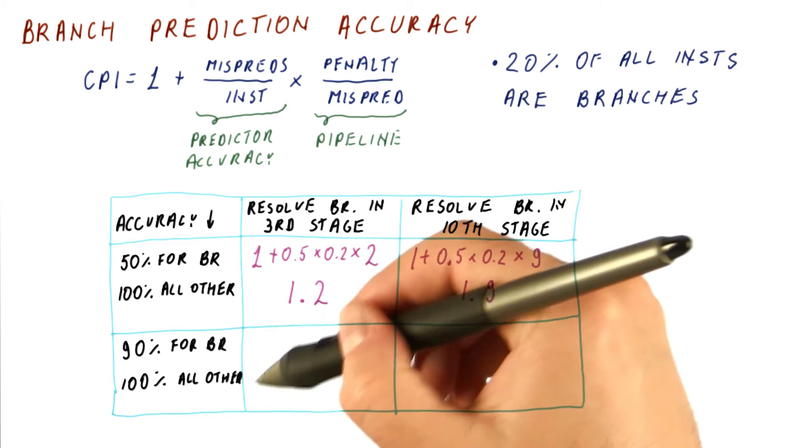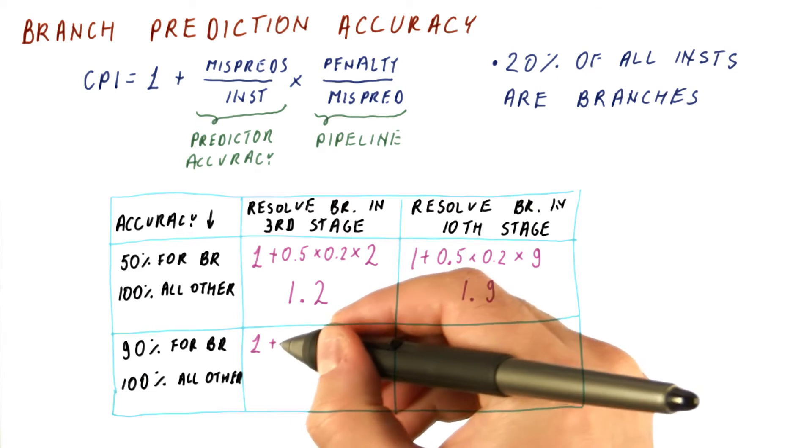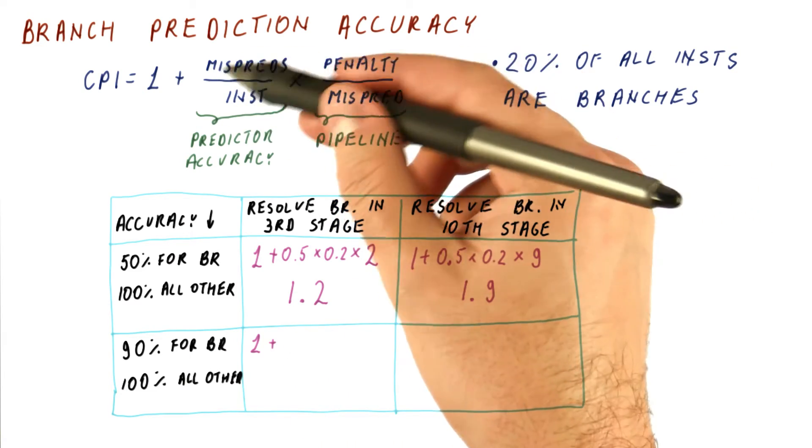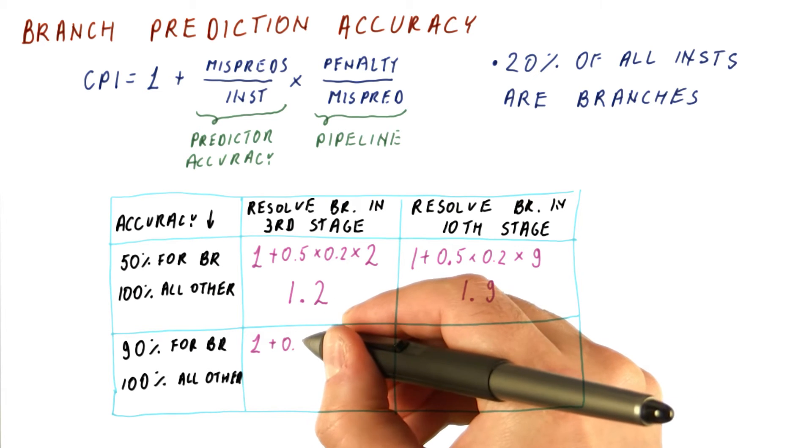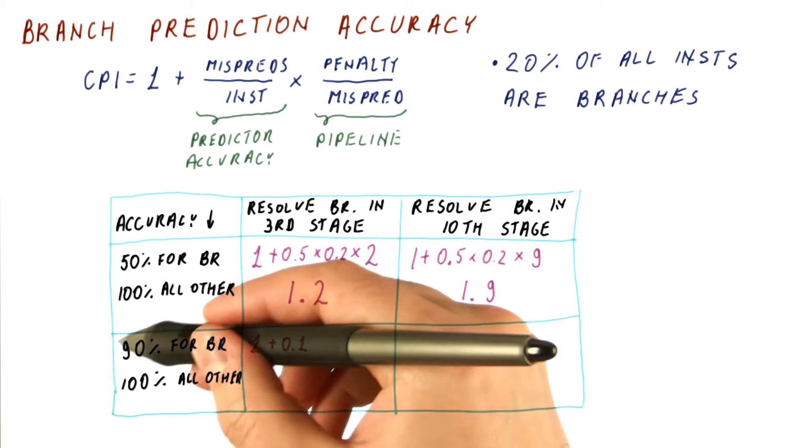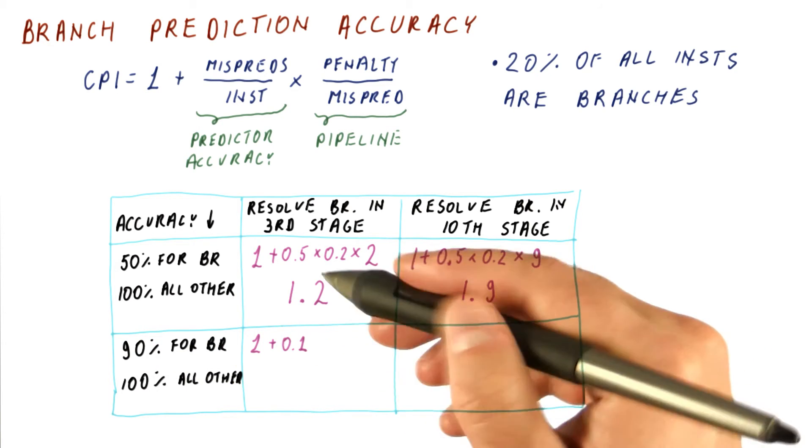Now let's look at the more accurate branch predictor. Now what we have is 1 plus mispredictions per instruction are going to be how many mispredictions we have per branch. We are 90% accurate, that means we are 10% misprediction.